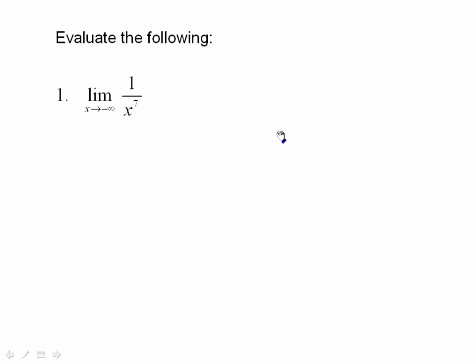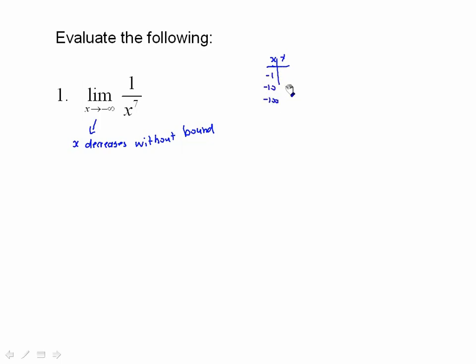Here we have the limit of 1 over x^7 as x approaches negative infinity, meaning x decreases without bound. If x is negative 1, negative 10, negative 100, you get 1 over negative 1, 1 over negative 10^7, and so on. It still approaches 0 — just from the opposite direction. The numbers are negative but approaching the asymptote y = 0.